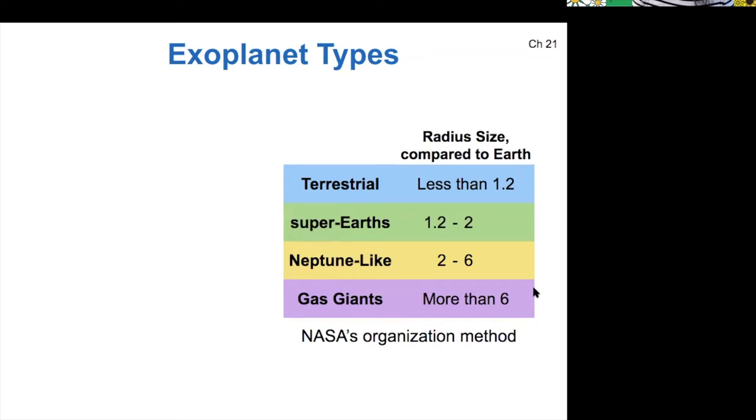For exoplanets, because you can't always measure their mass, the transit method only gives you the size. And so if you want the mass too, you have to measure them also with the radial velocity method. So for a lot of exoplanets, we know their radii, but we don't know their mass, and so therefore we don't know their density.